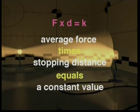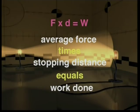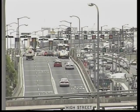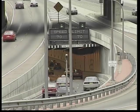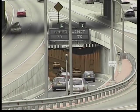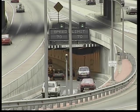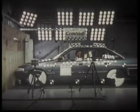To conclude part one, we've discovered that average force times distance is a constant value, and is also a measure of the work done during the car crash. On the road, this means you need to allow yourself a safe distance to stop. The greater the distance you stop over, the smaller the forces on you. Before we go to part two, consider this question: if two cars of equal mass going at equal speed collide head-on, is this any different to a similar car running into a solid wall at the same speed?